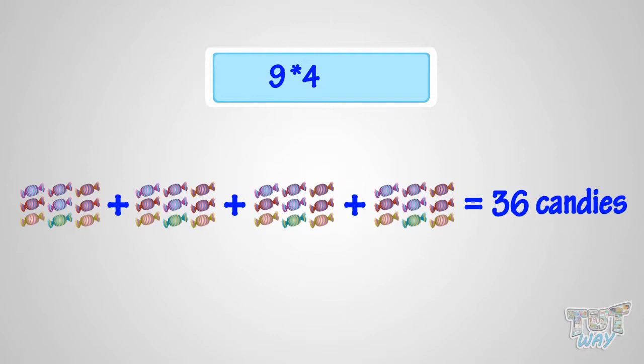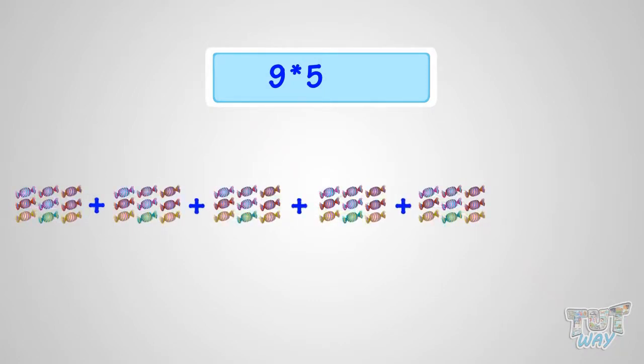That is, 9 multiplied by 4 is 36. What is 9 multiplied with 5? It is same as 5 sets of 9 candies. So, it is 45 candies. That is, 9 multiplied by 5 is 45. Good!